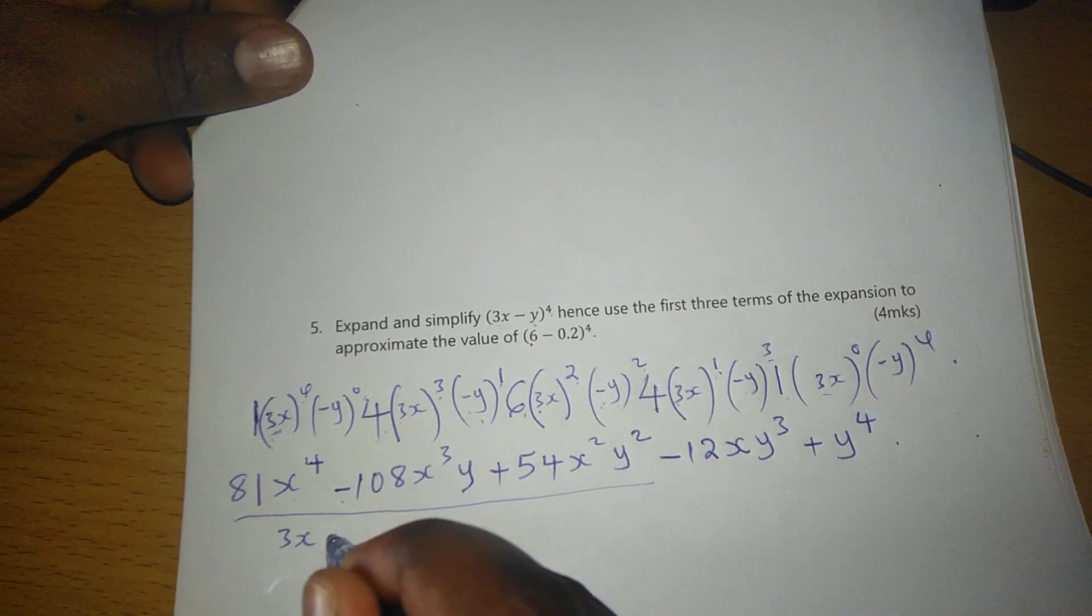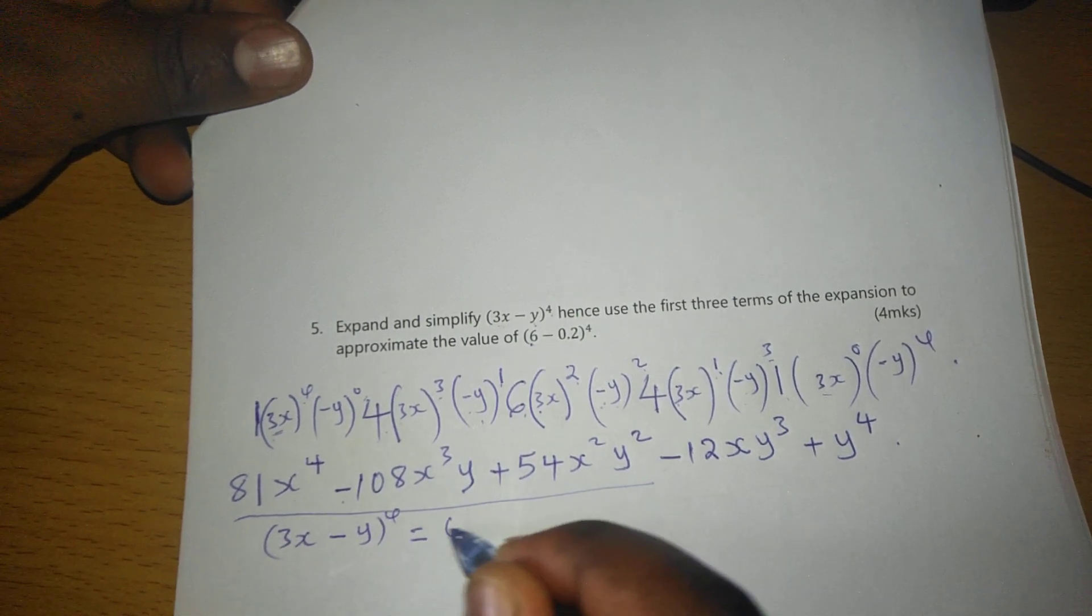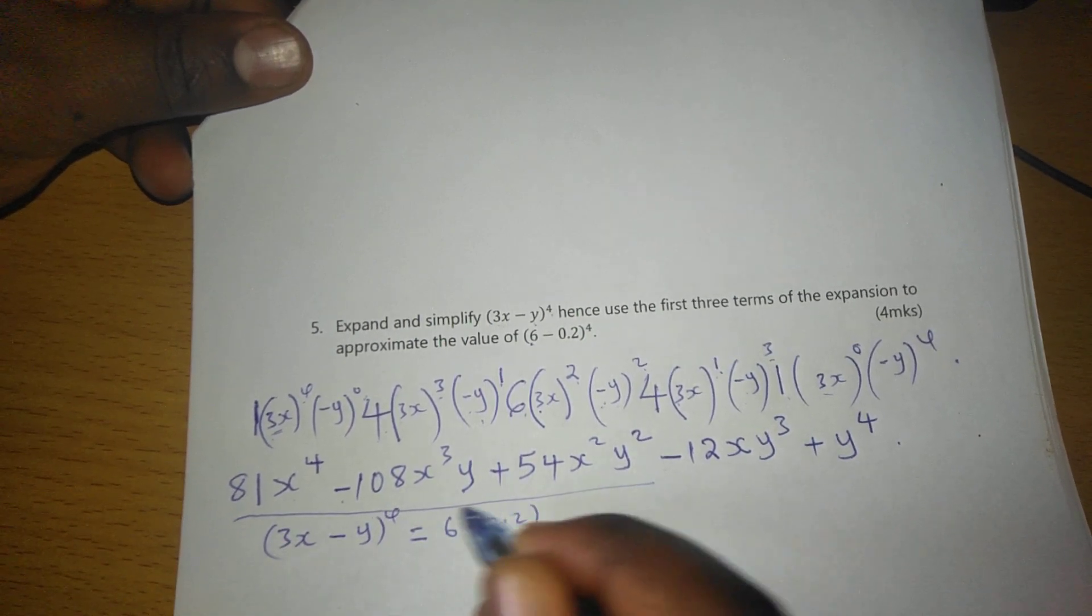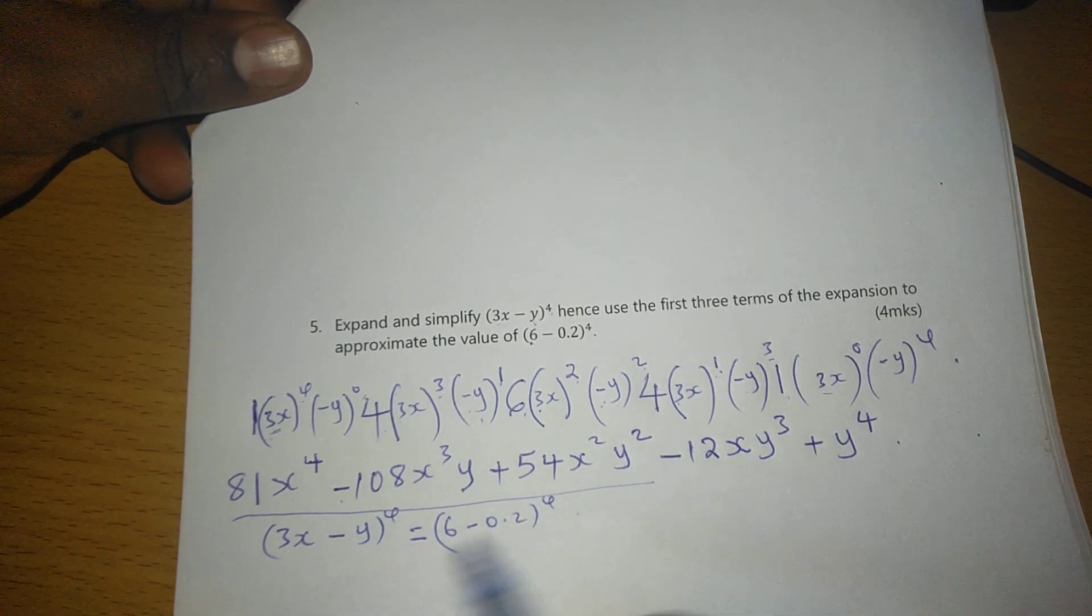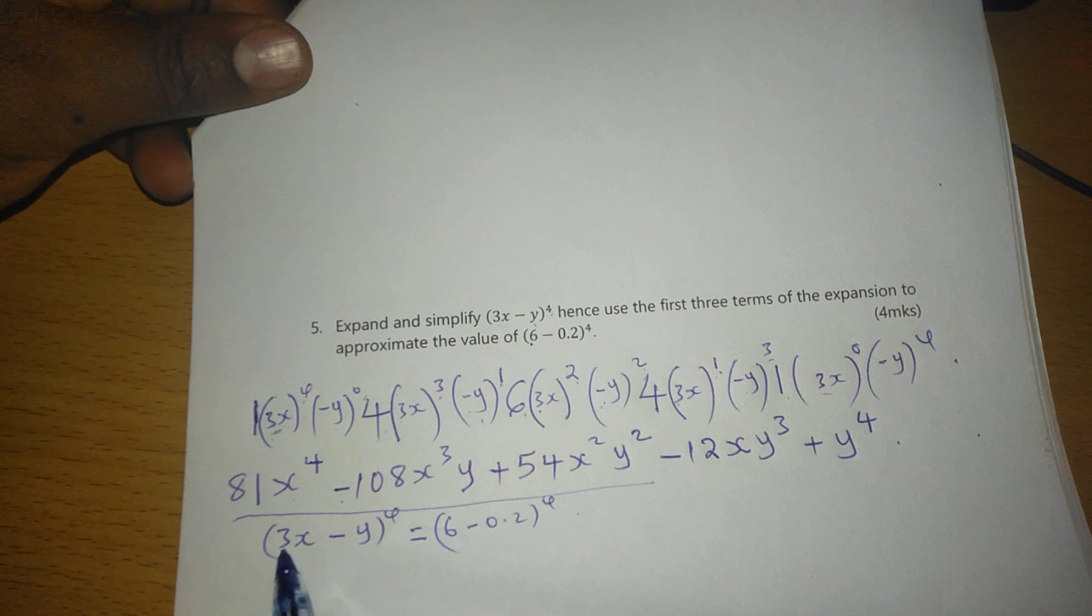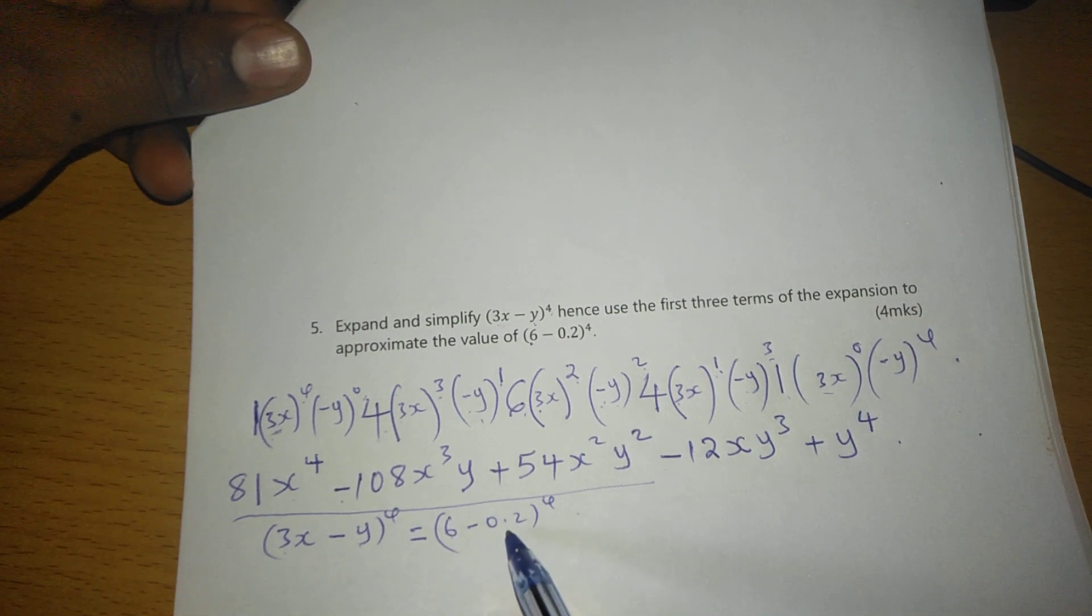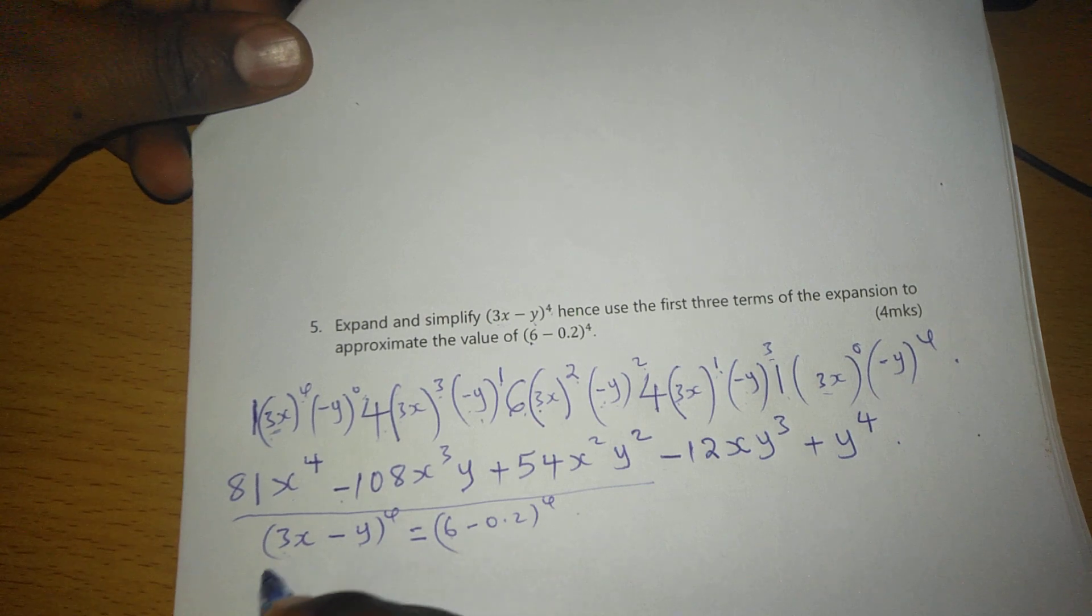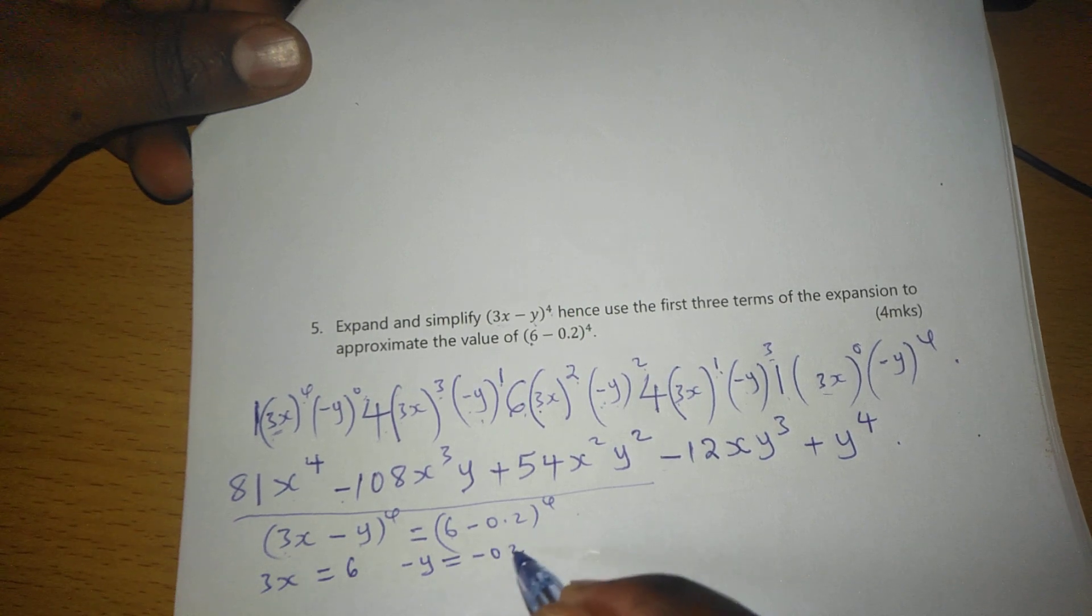equate (3x - y)^4 with (6 - 0.2)^4, such that because the powers are equal, then we can say 3x - y is equal to 6 - 0.2, such that 3x can be equated to 6 and -y can be equated to -0.2.